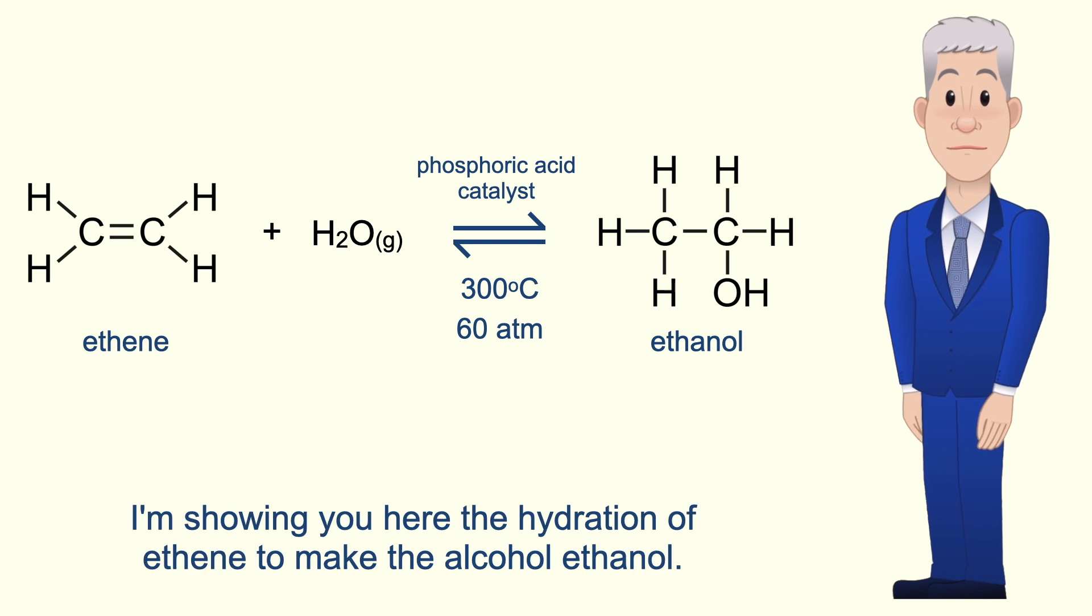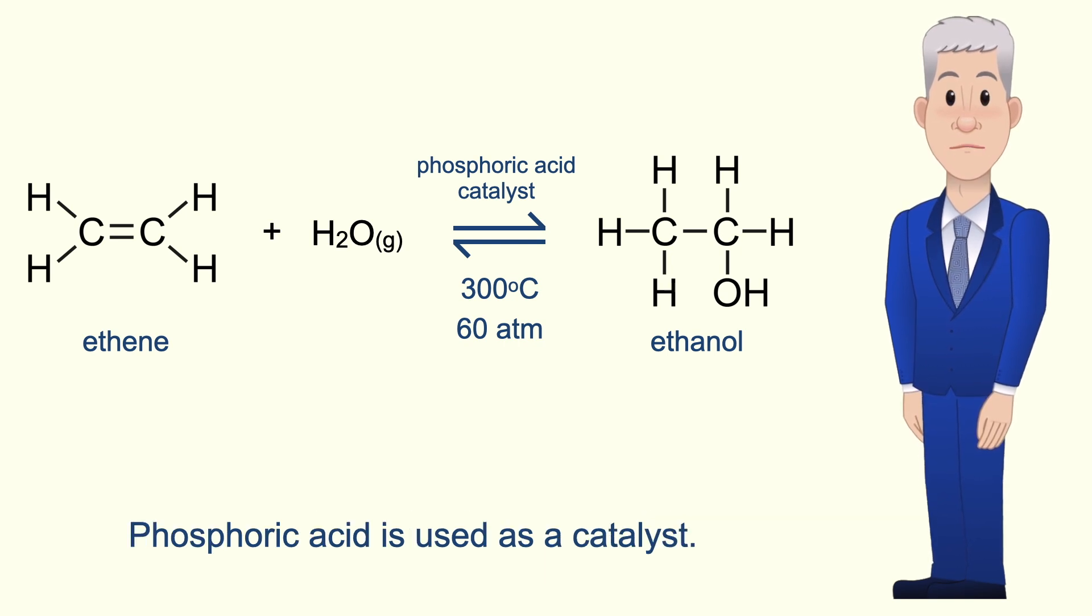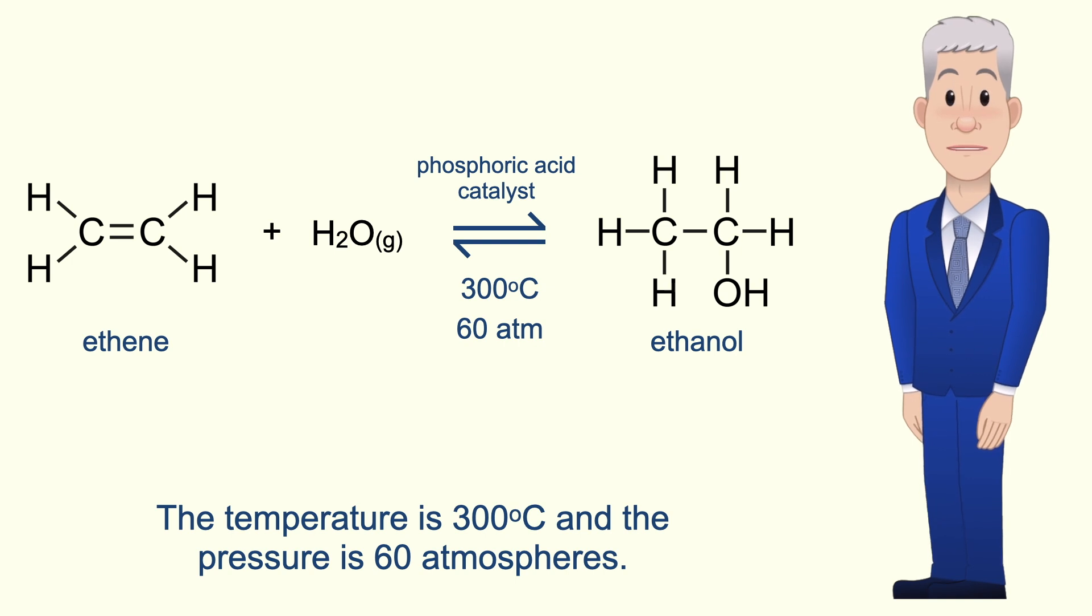I'm showing you here the hydration of ethene to make the alcohol ethanol. In hydration the water is in the form of steam and phosphoric acid is used as a catalyst. The temperature is 300 degrees celsius and the pressure is 60 atmospheres.